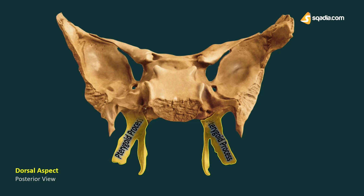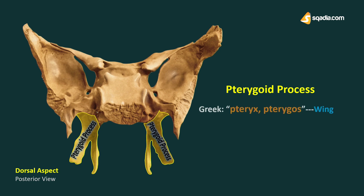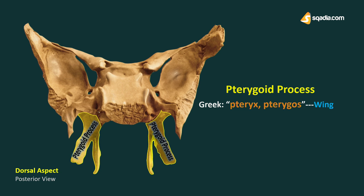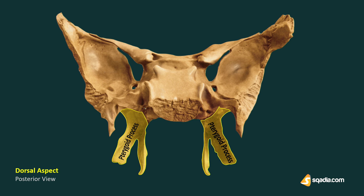The pterygoid process of the sphenoid forms from the word 'charyx' or 'pterygos,' which means wing. It is present one on either side and descends perpendicularly from the regions where the body and the greater wings of the sphenoid bone unite.